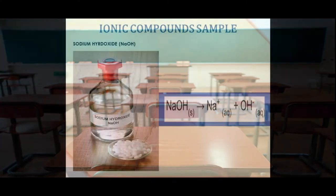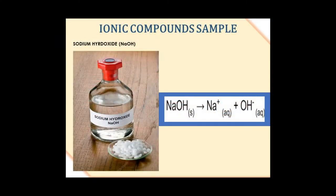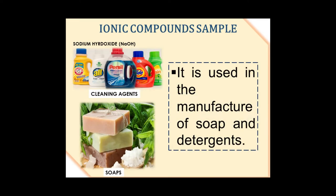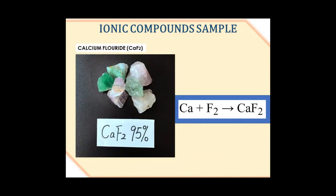Like all other compounds, substances formed by these types of compounds are necessary in our daily living. Here are some examples of common ionic compounds and their uses. Sodium hydroxide is used as a cleaning agent. It is used in the manufacture of soap and detergents.